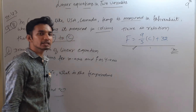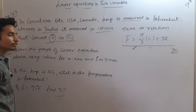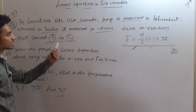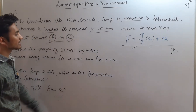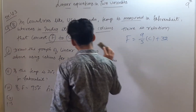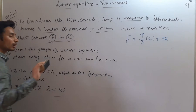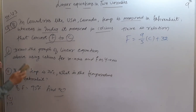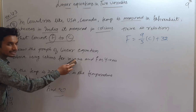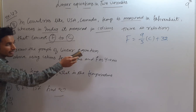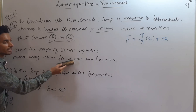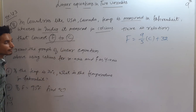The first part asks us to draw the graph of the linear equation establishing the relation between Fahrenheit and degree Celsius — the two units used for measuring temperature. Celsius is represented on the X-axis and Fahrenheit on the Y-axis.